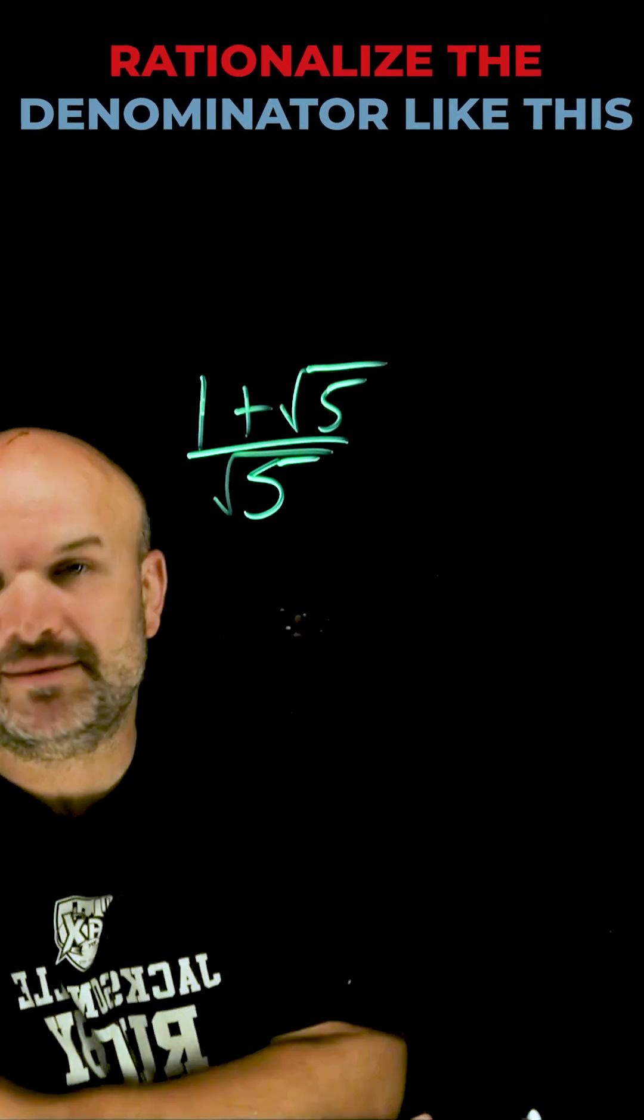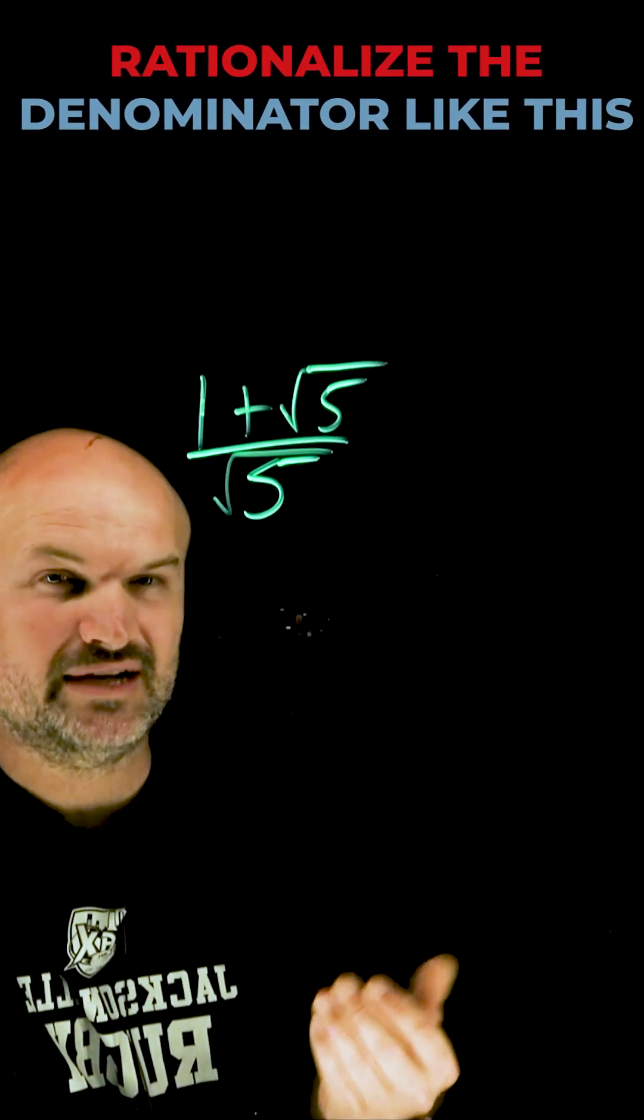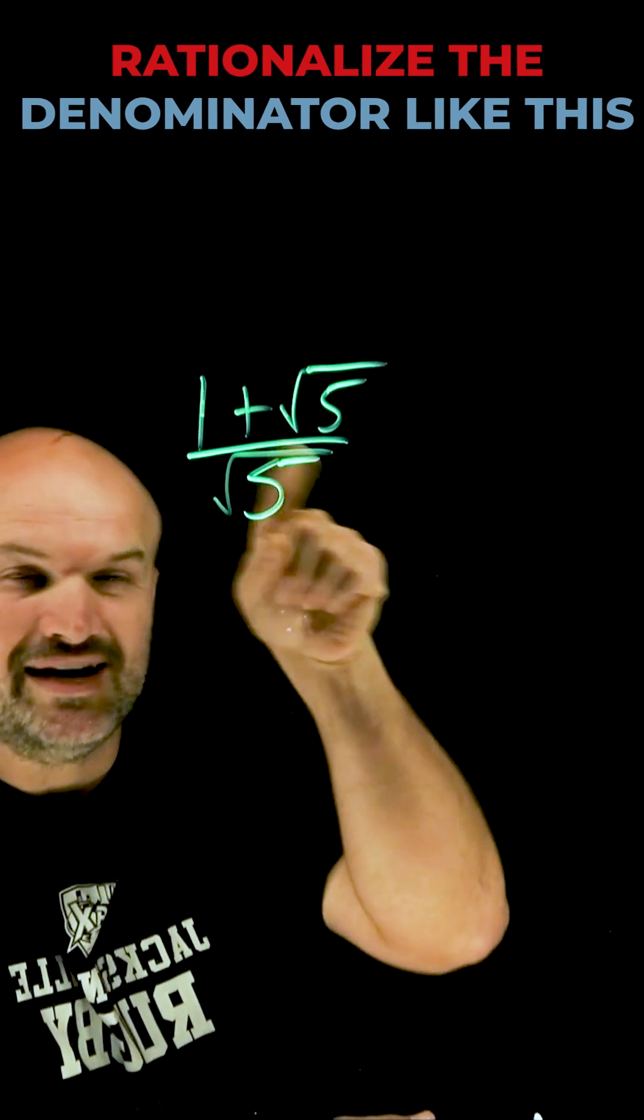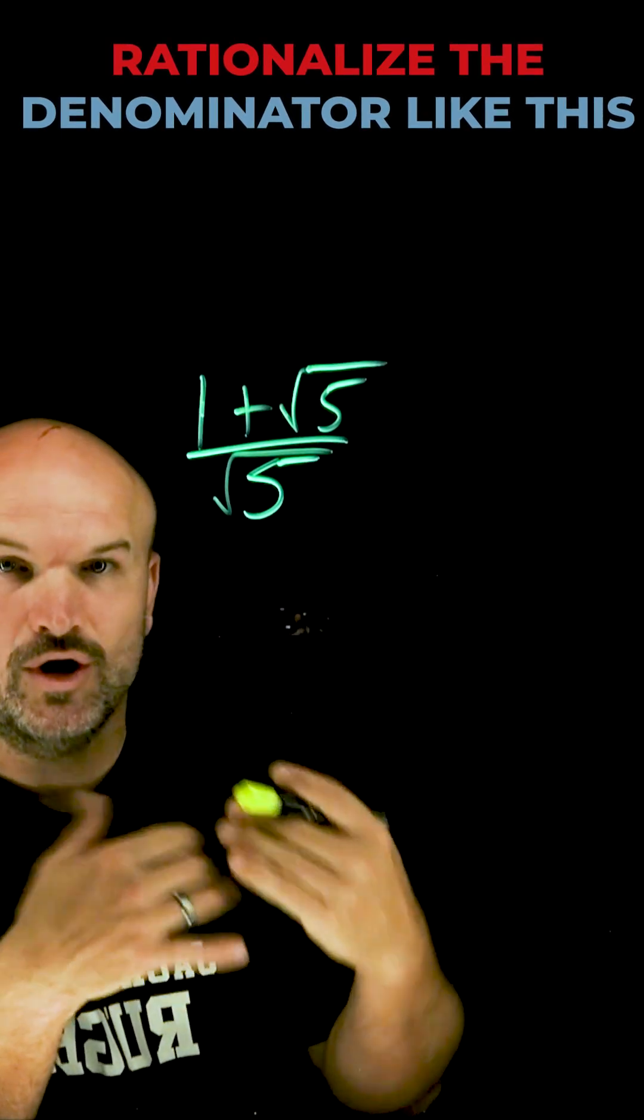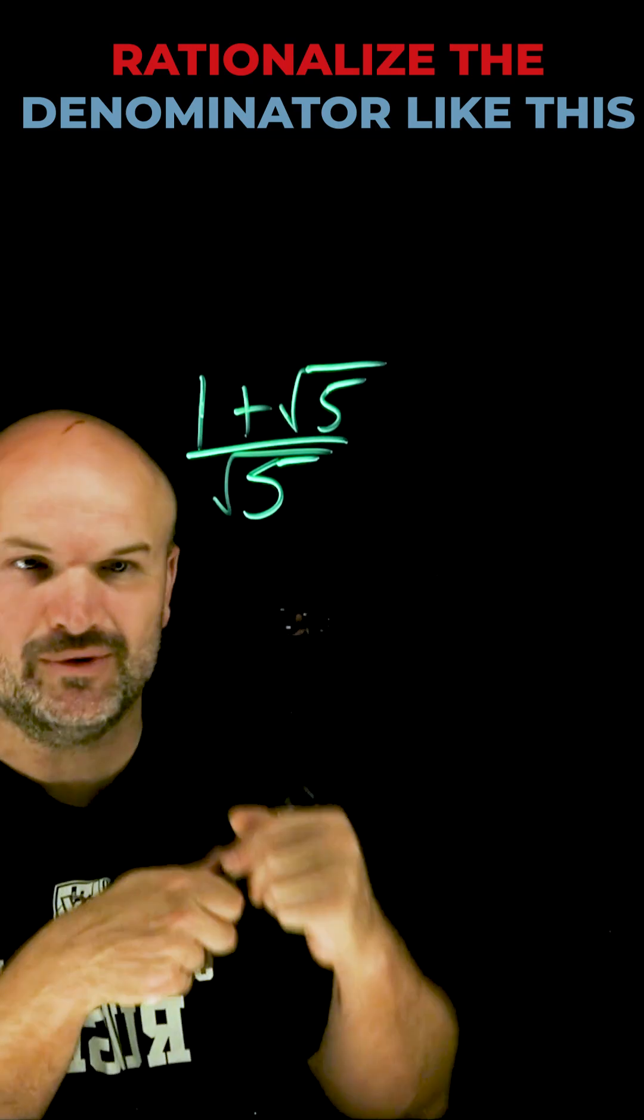Let's go over rationalizing the denominator for a problem that looks like this. When we're trying to rationalize the denominator, there's two things I want you to understand. We're trying to get rid of the radical in the denominator, and to get rid of the radical in the denominator, we've got to be able to create something that we can take the square root of.